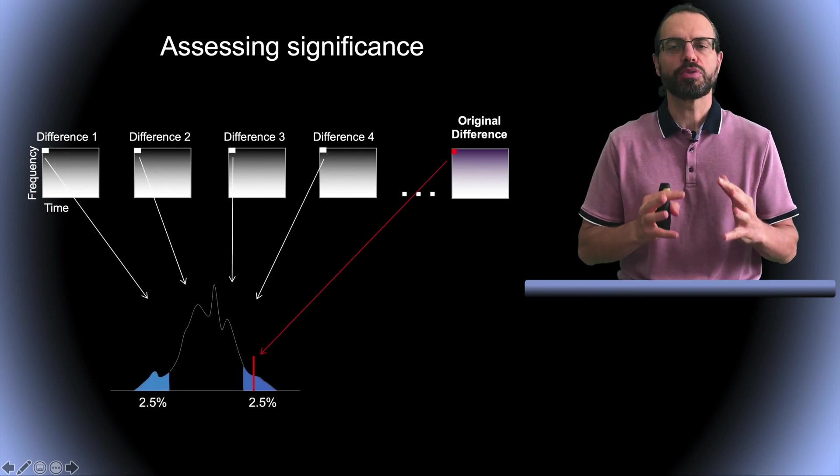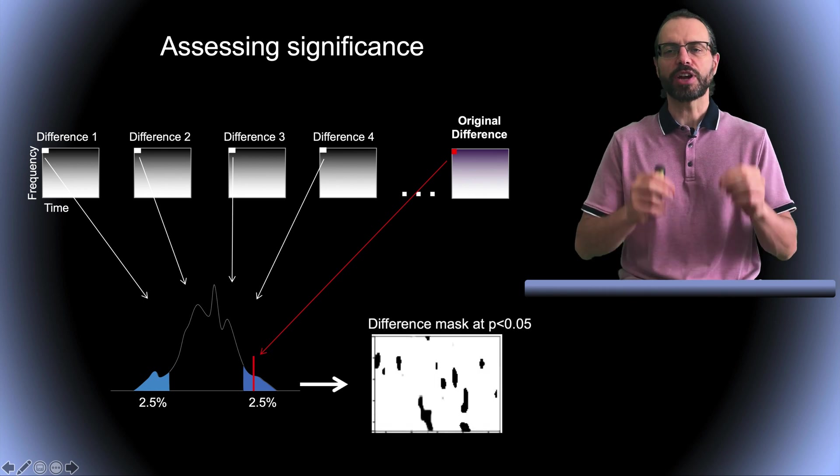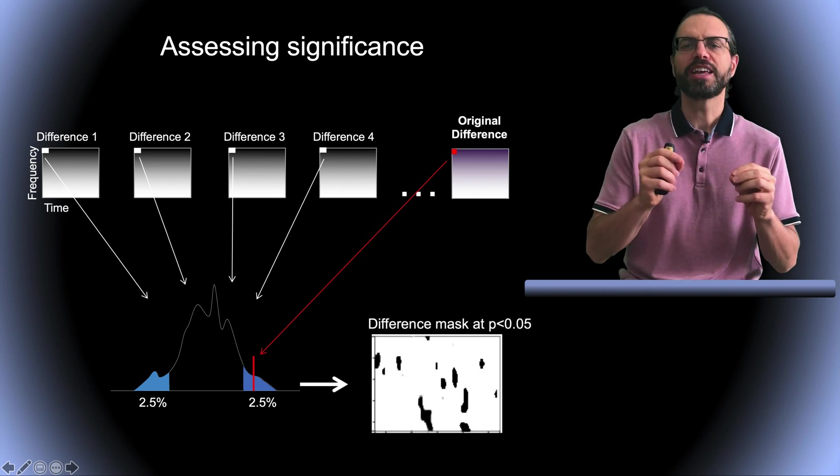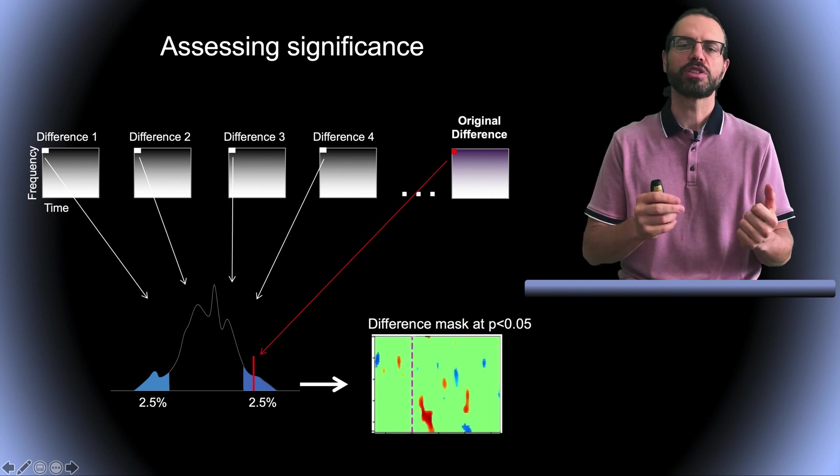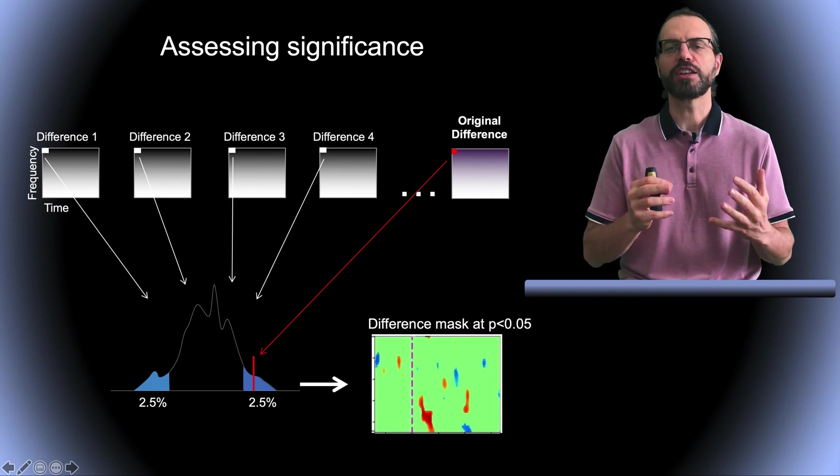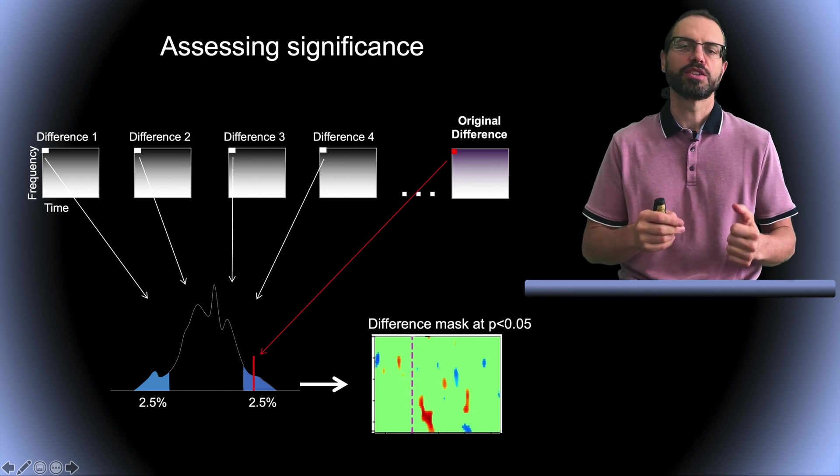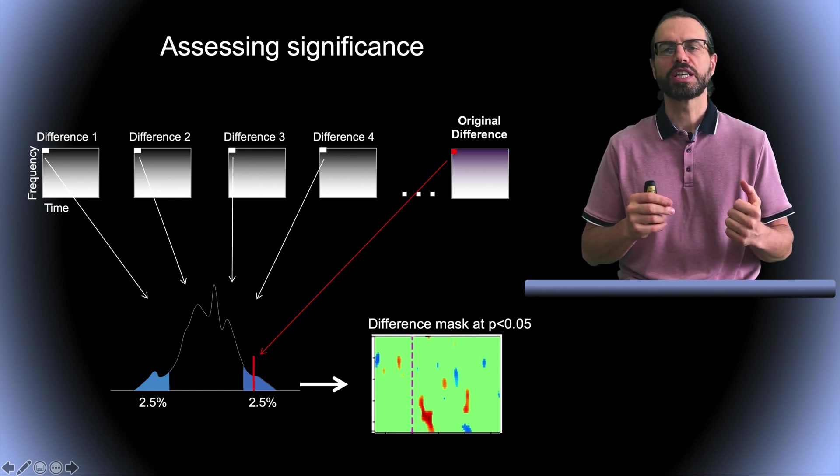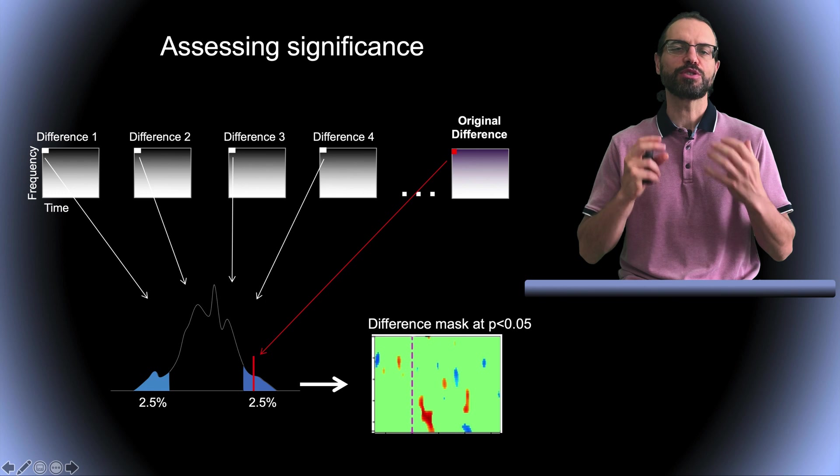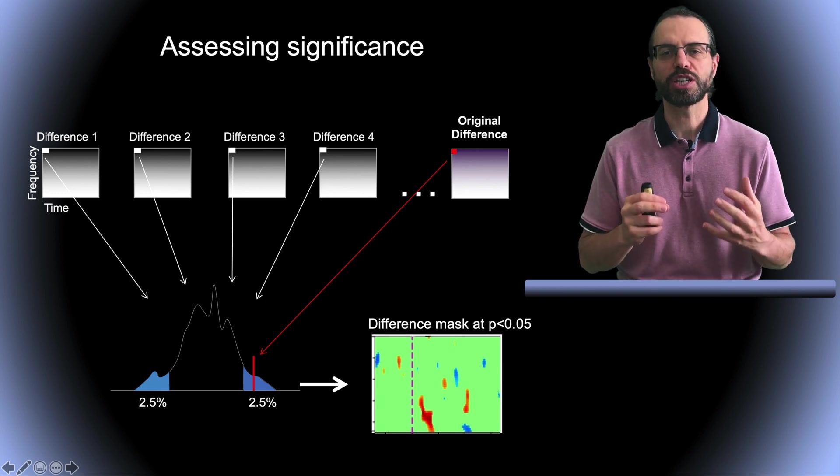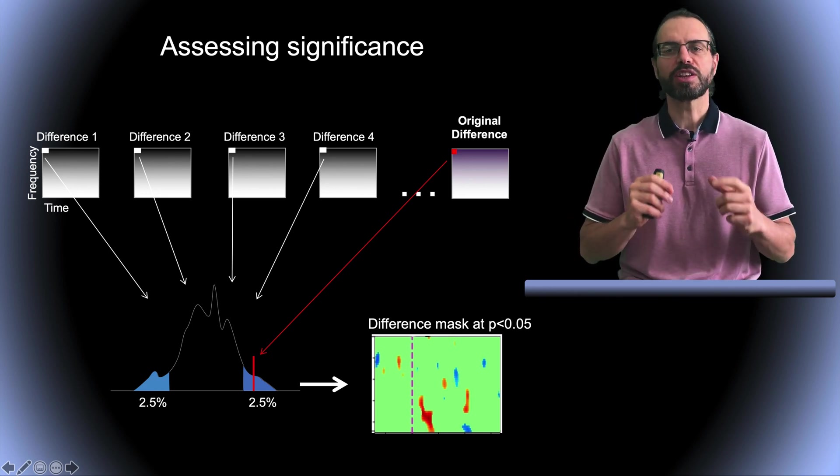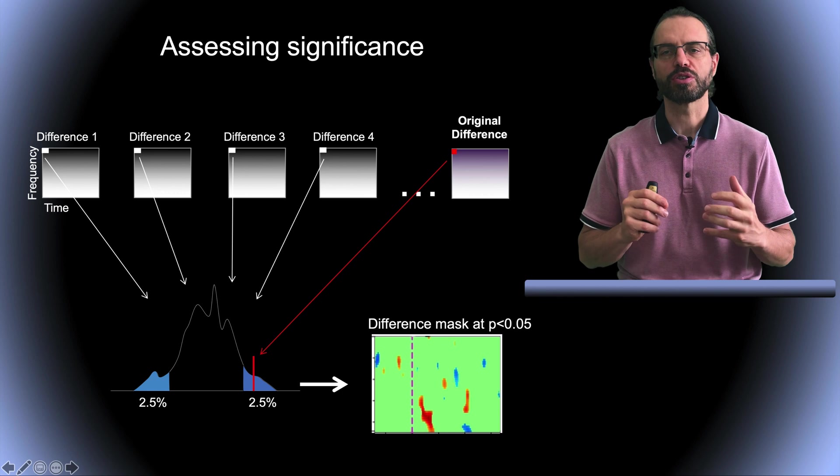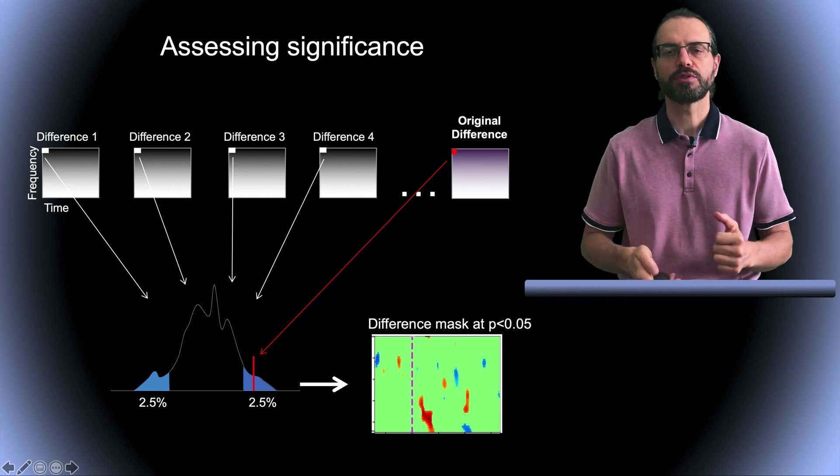So the standard approach is to calculate statistics for every pixel, one by one, as if the pixels were independent. Then you would obtain a significance mask, which you may use to mask the values which are not significant. The problem with this approach is that with the standard 0.05 statistical threshold, by chance 5% of the pixels will end up being significant, even though there might be no difference between the conditions you're comparing. So how can we solve that problem?